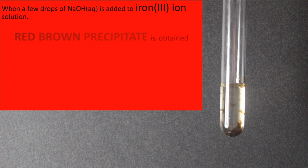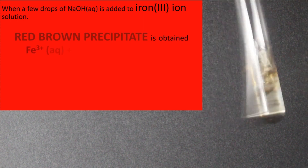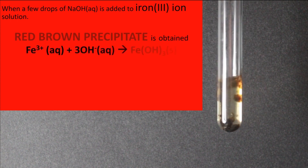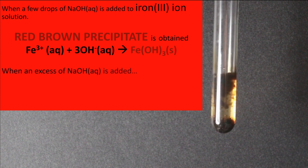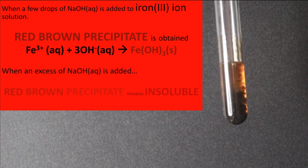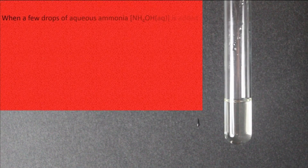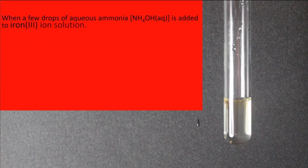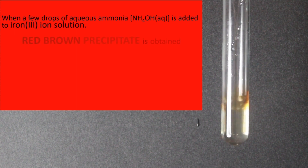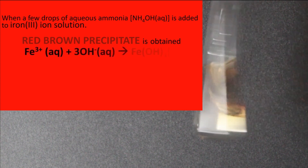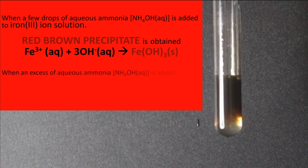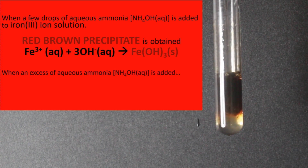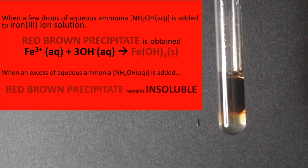Iron 3 ions give a red-brown precipitate with aqueous sodium hydroxide, and this precipitate is insoluble in excess sodium hydroxide. Iron 3 ions give a red-brown precipitate with aqueous ammonia, and this precipitate is insoluble in excess aqueous ammonia.